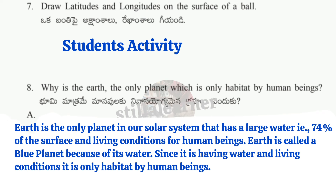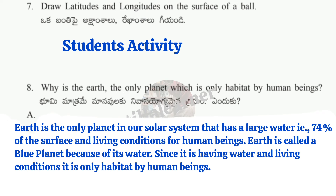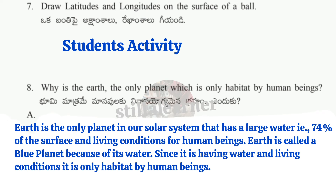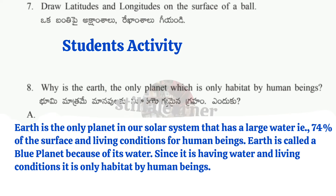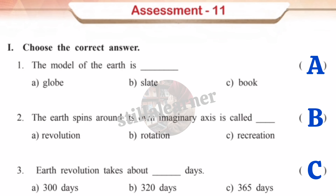Question eight: Why is the earth the only planet inhabited by human beings? Answer: Earth is the only planet in our solar system that has a large amount of water — 74% of its surface — and living conditions for human beings. Earth is called the blue planet because of its water, and since it has water and living conditions, it is the only planet inhabited by humans.